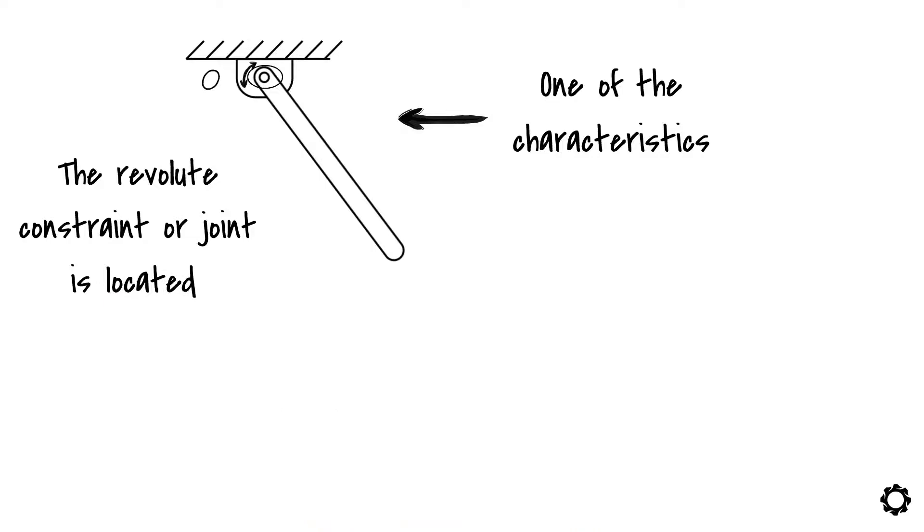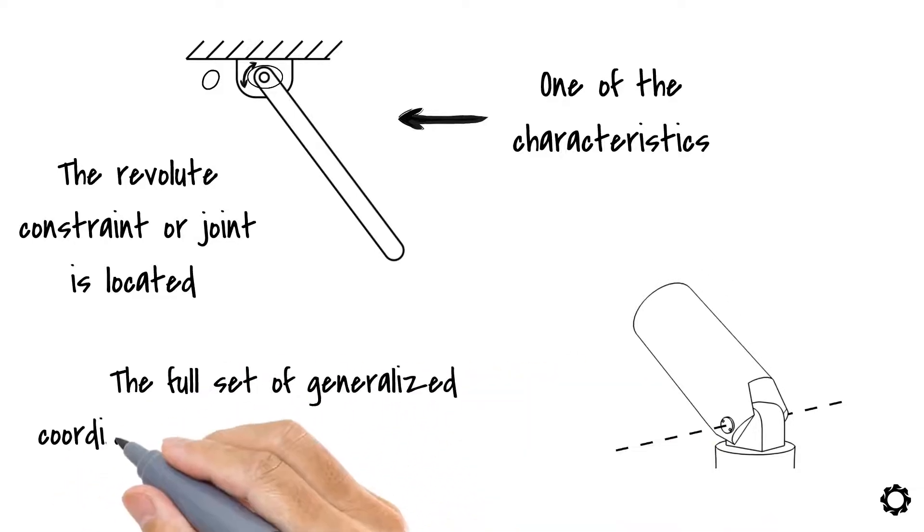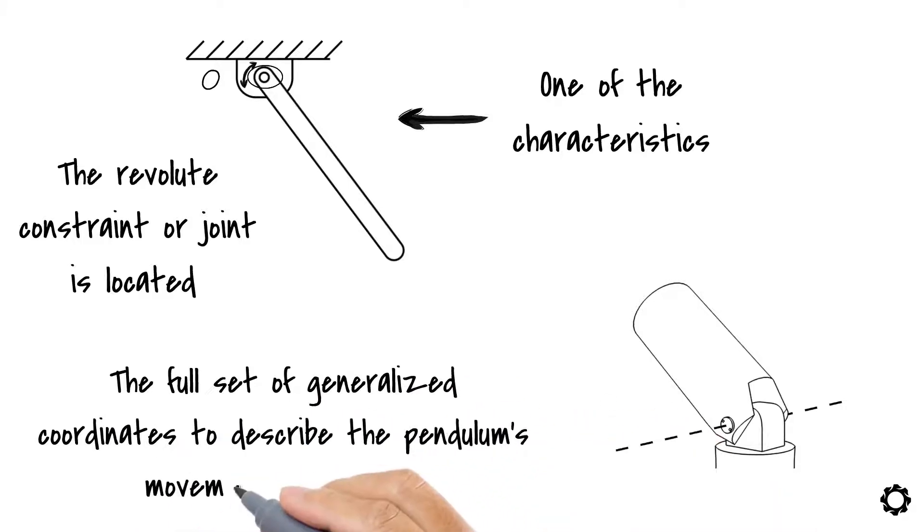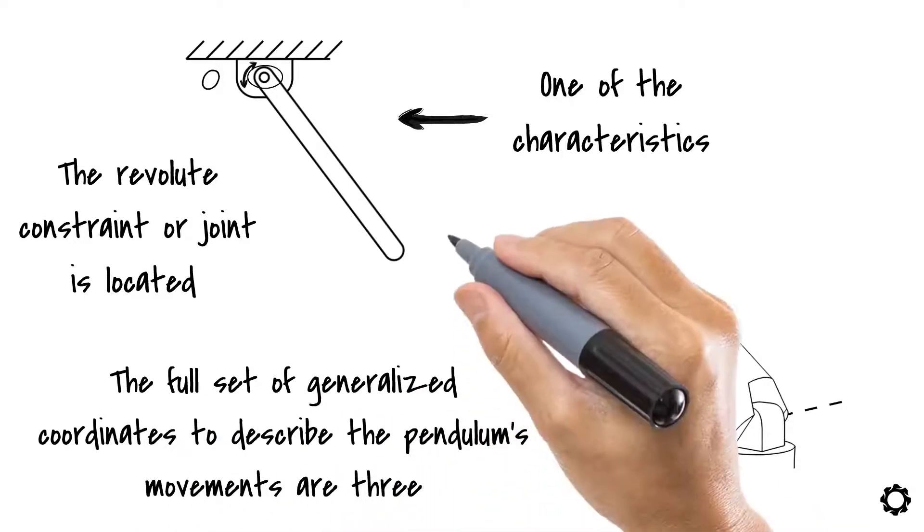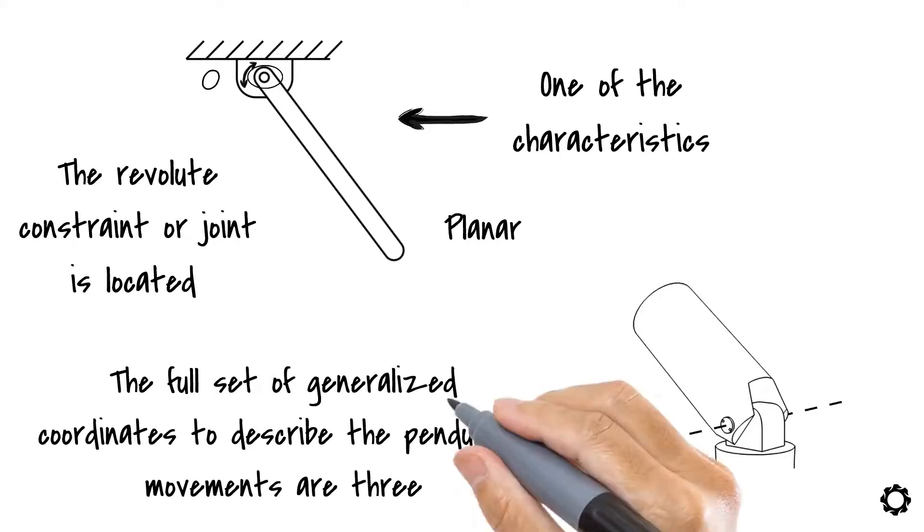We know from our previous lessons that a revolute joint only allows one rotation and restricts the translations. Now we also know that the full set of generalized coordinates to describe the pendulum's movements are three because this is a planar movement and we have just one body, the bar of the pendulum.